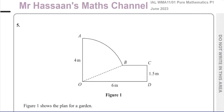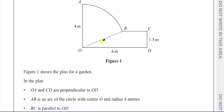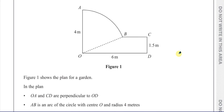This question is about radian measure and a bit of trigonometry. We're given a plan for a garden with a shape that looks like a trapezium and a section of a circle stuck to it. We're told that OA and CD are both perpendicular to OD, meaning there are right angles at those corners, and those two lines are parallel to each other.